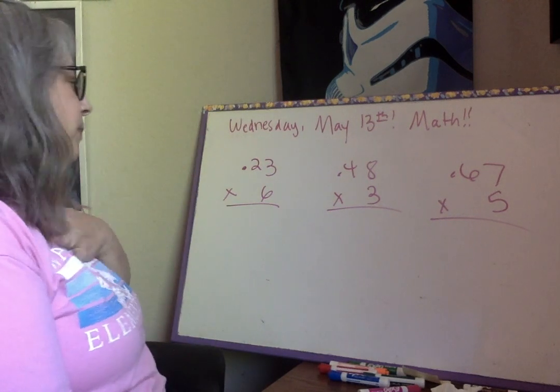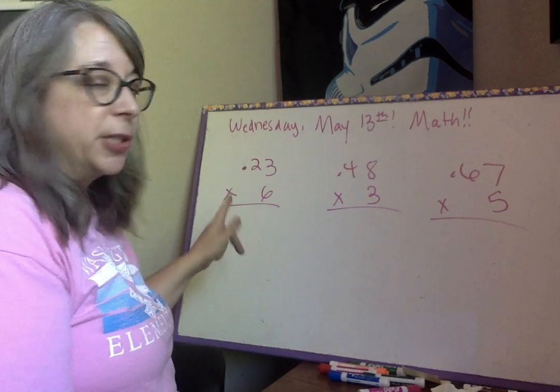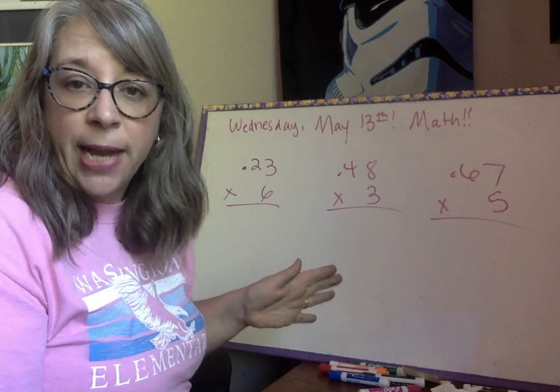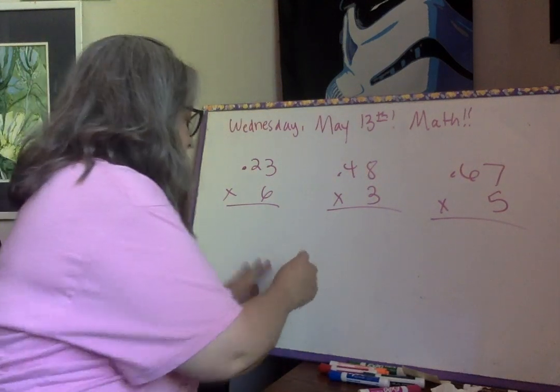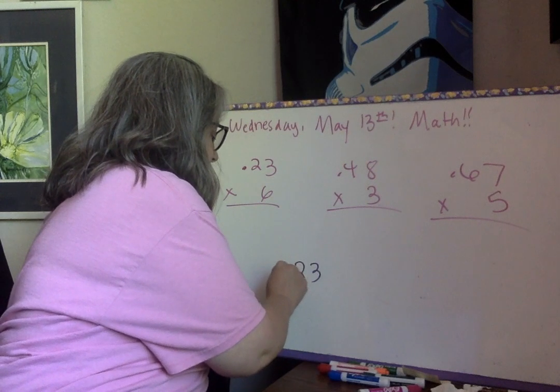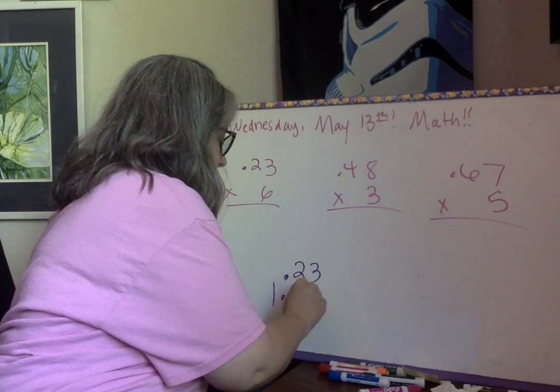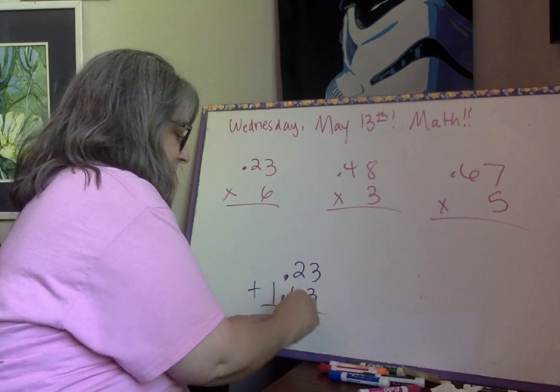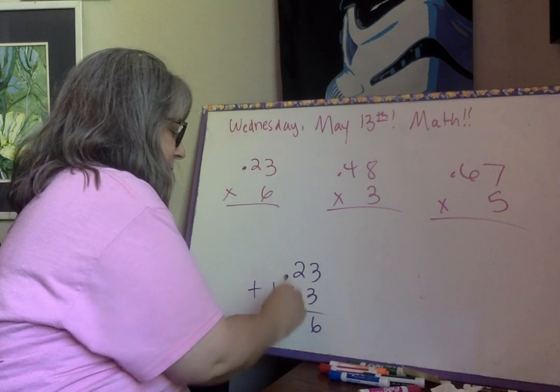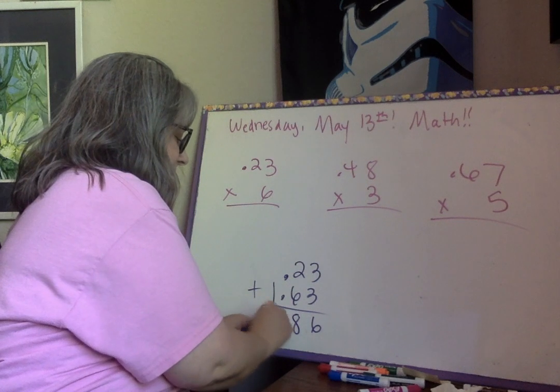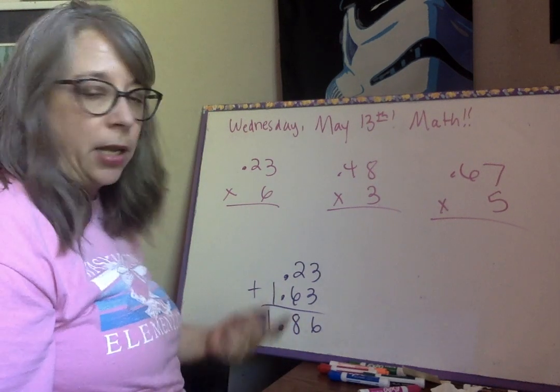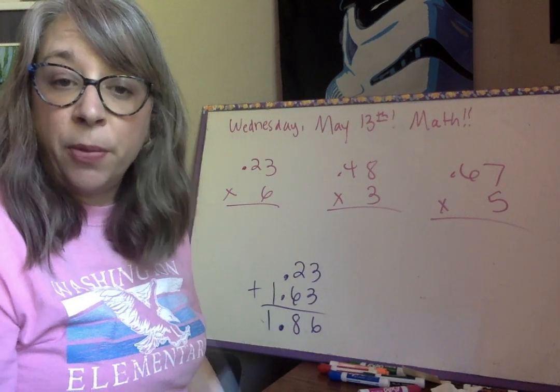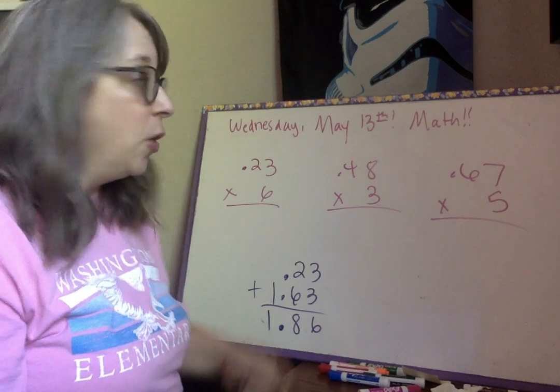So remember, whenever you're multiplying decimals, it's different than when you're adding or subtracting decimals. Because remember, whenever you're adding decimals, all we do is we just drop down our decimal. But when we're multiplying, we have to hop.